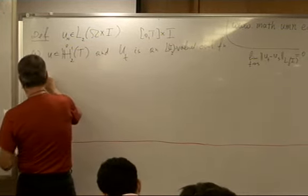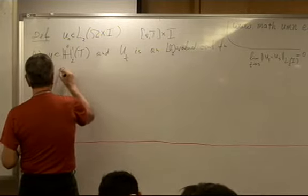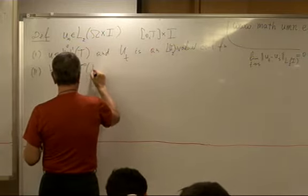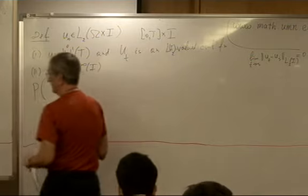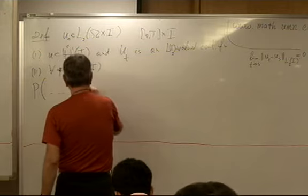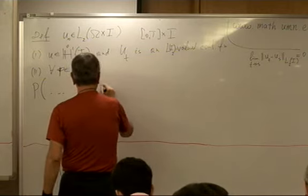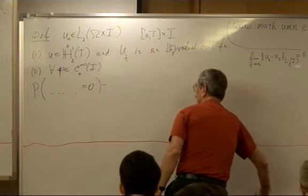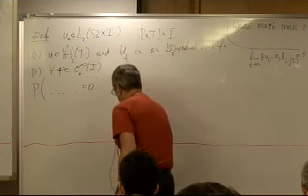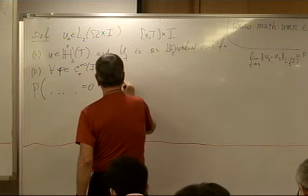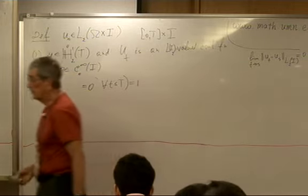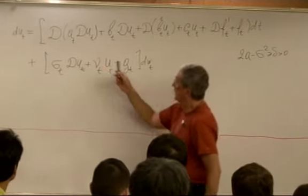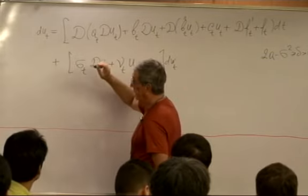The second requirement is that for any phi in C zero infinity, so called test function, what we have is probability that something is zero for all T. And what is there, for all T less than capital T, is one. And what is here, you understand, you multiply the equation formally by phi and integrate. Yes. And you integrate by parts when you have phi here for the whole reason.